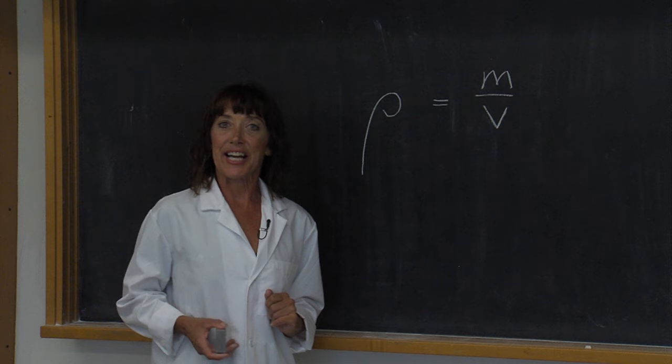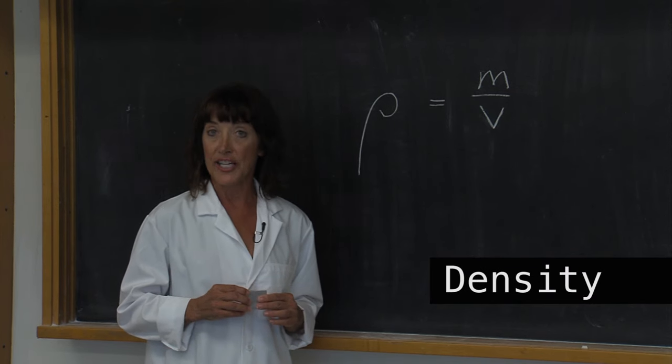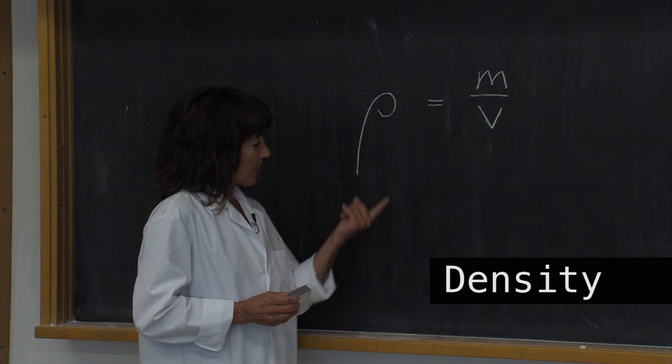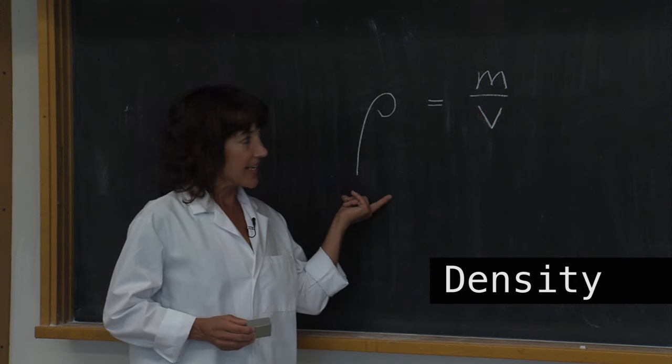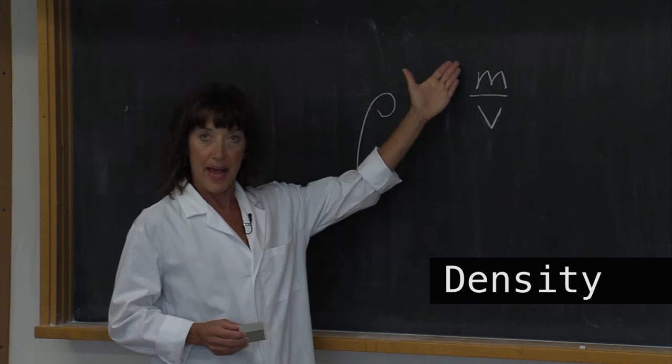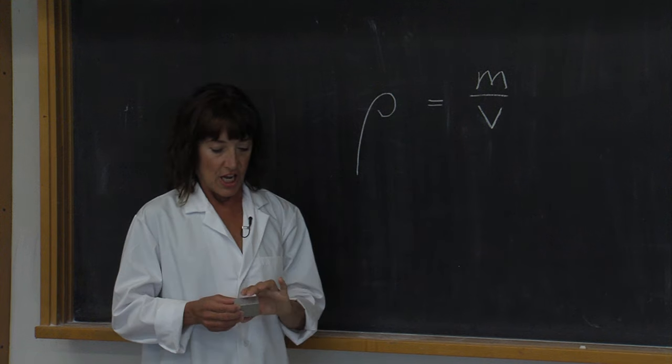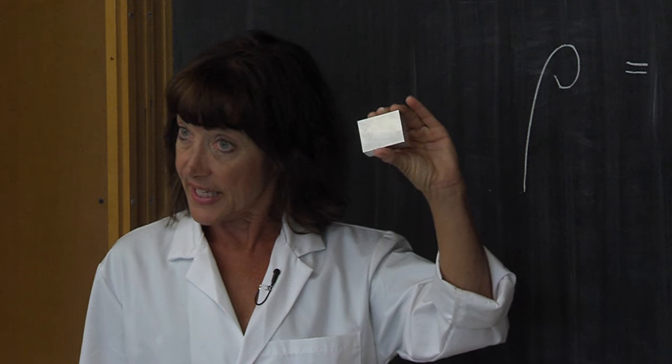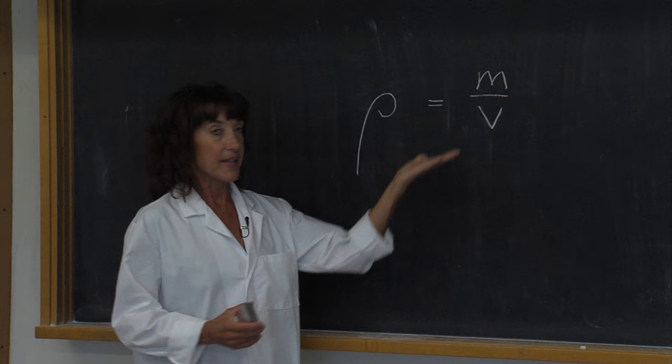Let's begin by calculating the density of this block. Density is a defining property of matter. We represent it with the Greek letter rho, and it is mathematically defined as mass divided by volume. So in order to calculate the density of this block, we will have to determine its mass and its volume.